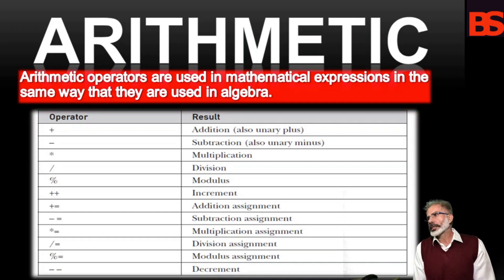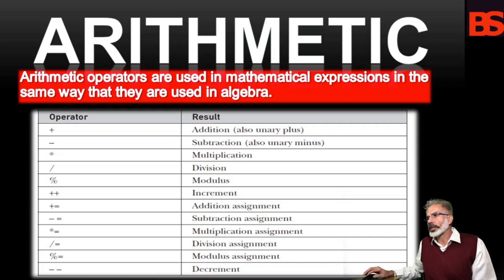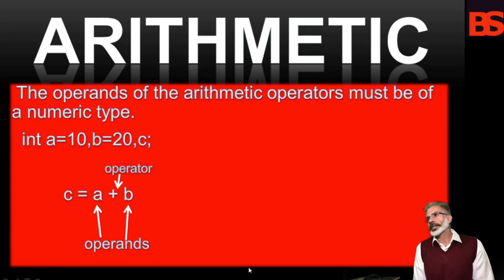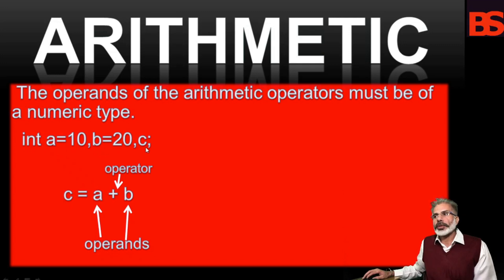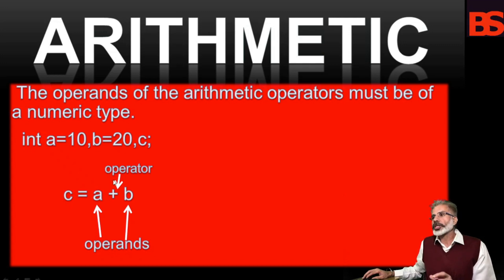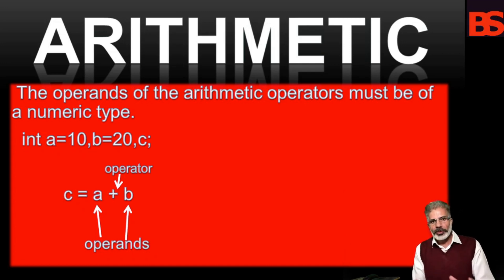Arithmetic operators are used in mathematical expressions in the same way that they are used in algebra. The list includes addition, subtraction, multiplication, and division. The operands of the arithmetic operators must be of a numeric type. For example: int a = 10, b = 20, and c = a + b. Here a and b are operands and plus is the arithmetic operator. You cannot use them on boolean types, but you can use them on char type since char in Java is essentially a subset of int.